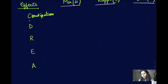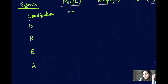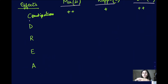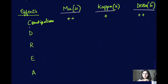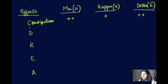C stands for constipation. All opioids act on receptors and tend to cause constipation. This constipation is seen maximally with mu and delta receptors. So if an opioid acts on all three receptors it will produce constipation, which can be a side effect, or even a desirable effect if the drug is being used for diarrhea.